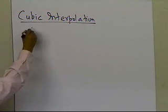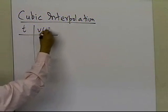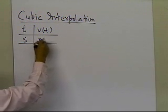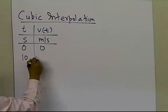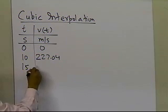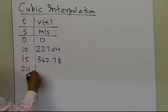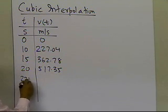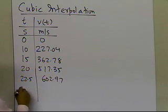Suppose we're given the value of velocity as a function of time at different times: at 0 seconds we have 0, at 10 seconds we have 227.04, at 15, at 20, at 22.5, and at 30 seconds.